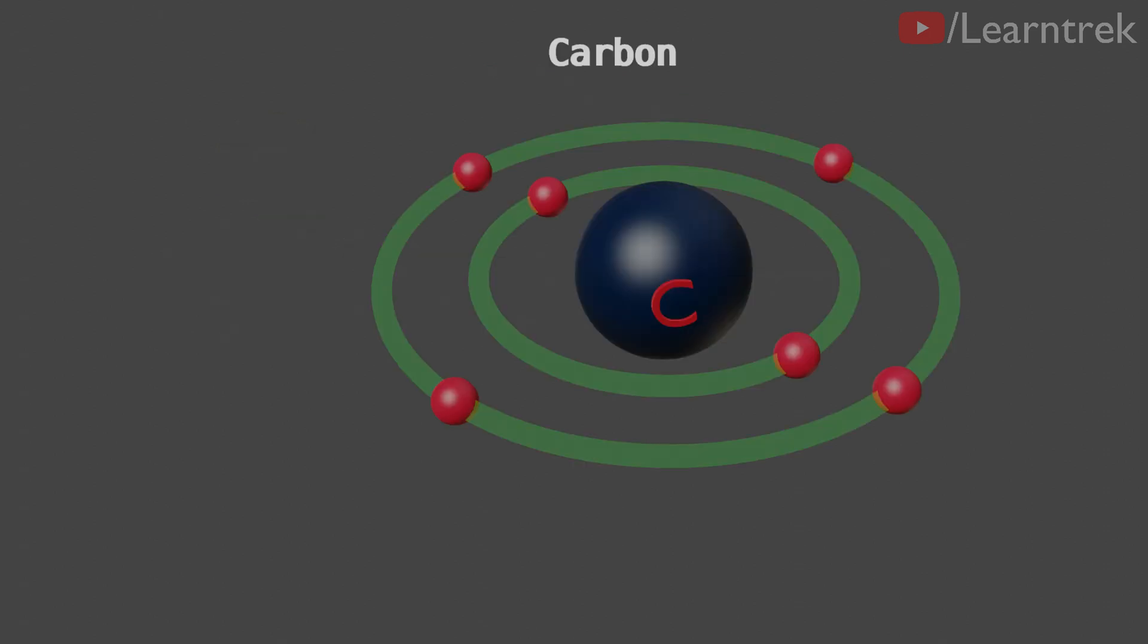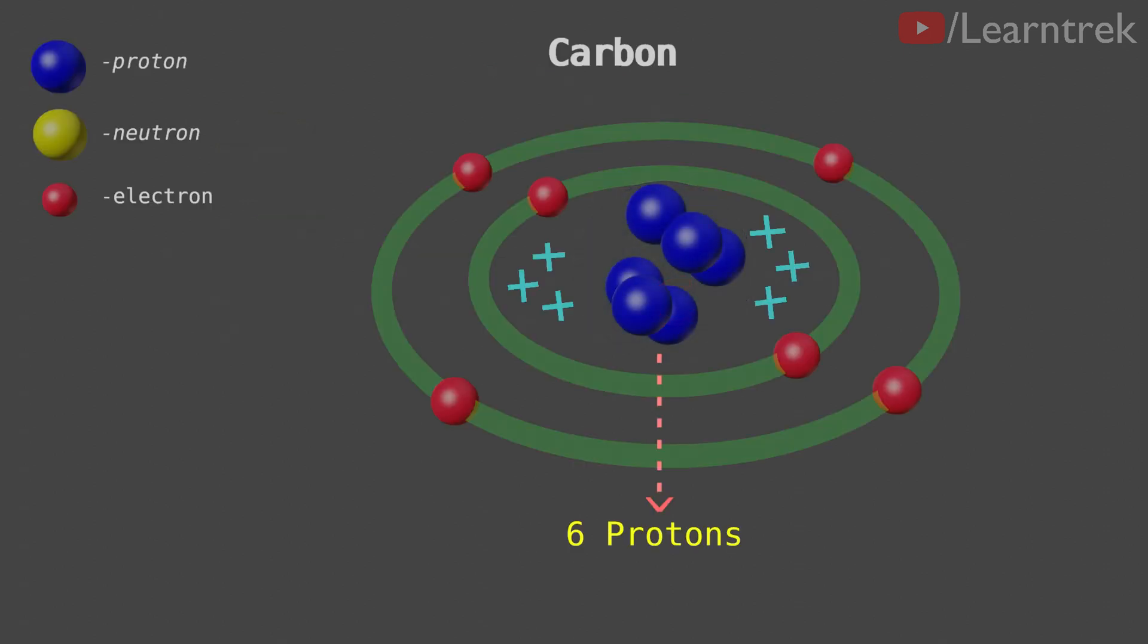Because carbon has six positively charged protons and six negatively charged electrons, if carbon loses its valence shell electrons one by one, then the net effect of protons' positive charge on the remaining electrons would increase.